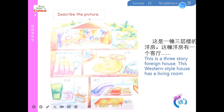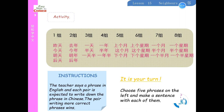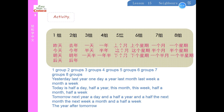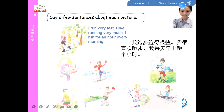Describe the picture. For example: 这是一幢三层楼的洋房。这幢洋房有一个客厅。Say a few sentences about each picture. For example: 我跑步跑得很快。我喜欢跑步。我每天早上跑一个小时。